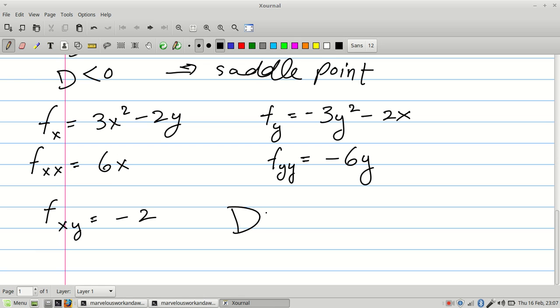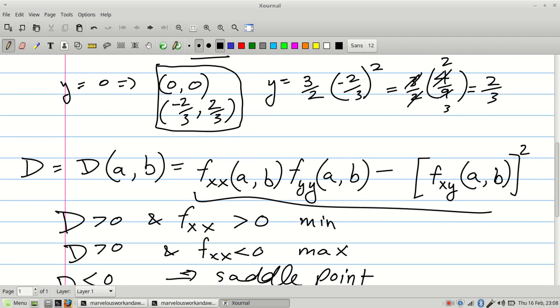D of xy is going to be 6x times negative 6y minus negative 2 all squared. Now this is going to be negative 36xy minus 4. So now all I have to do is plug in x and y. The two critical points were (0, 0) and negative 2 thirds, 2 thirds.